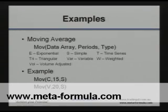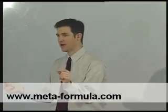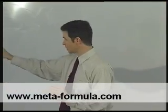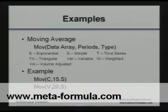and then we have three items, again separated by two commas and the closed brackets. What are the variables within the brackets? We have the data array, what we are taking the average of, the second item is the number of periods, and then the third item is the type of moving average. Before I talk about data array, just quickly to the type,